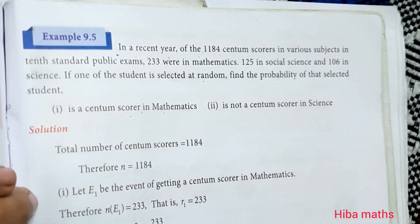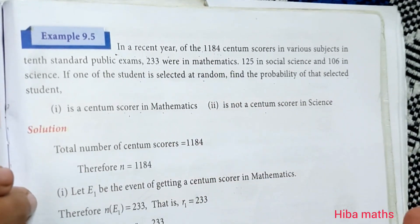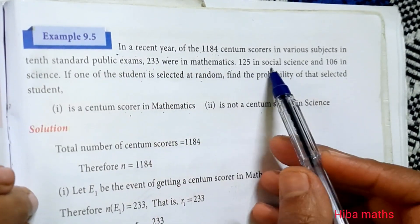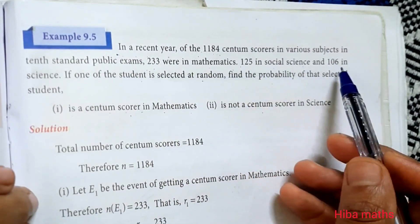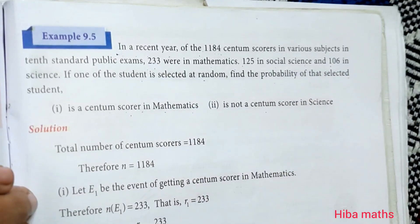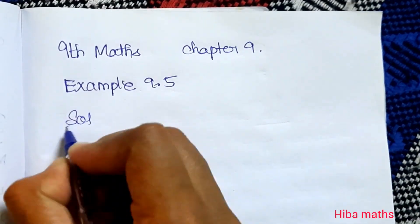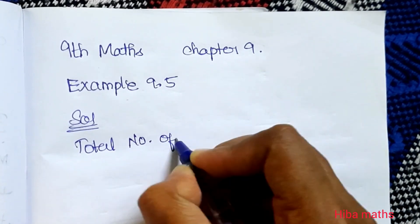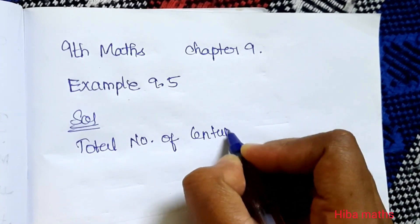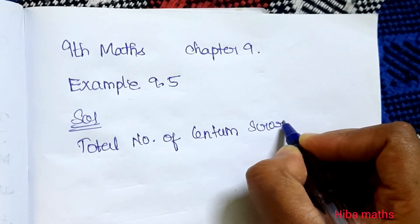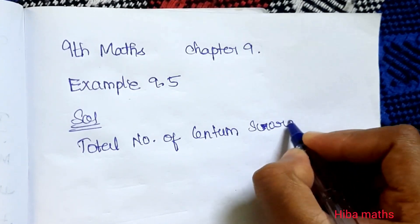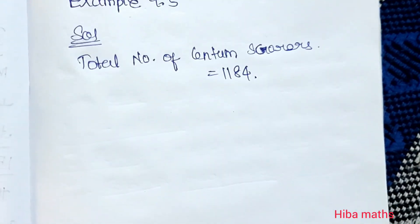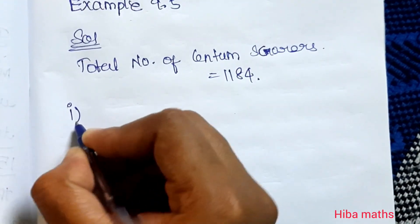All subjects together have 1184 Centum Scorers: Maths has 233 members, Social Science has 125, and Science has 106. We will solve this using these three values. In the solution, the total number of Centum Scorers — that is, n(S) — is equal to 1184.